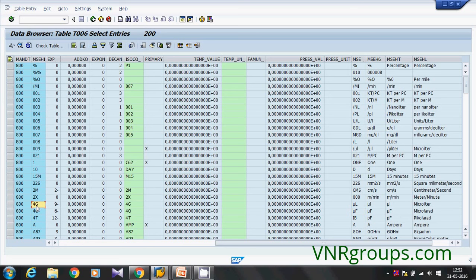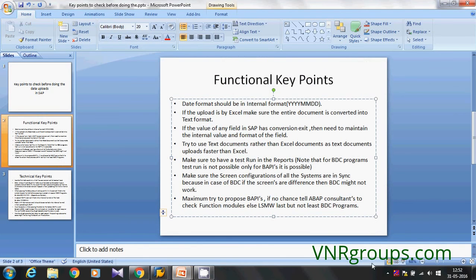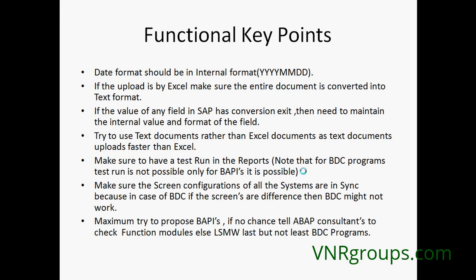Try to use tab-delimited text files or plain text documents rather than Excel documents, as uploading text documents is much faster than uploading Excel documents. Internally, SAP has to convert the binary data of an Excel document into SAP internal format. Text documents are also much smaller in size than Excel documents. So try to upload using tab-delimited or comma-delimited text files as much as possible.